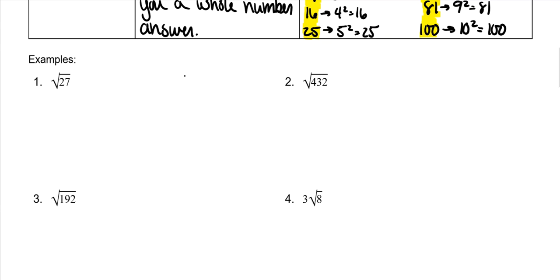Whenever we have square roots, there are two different ways that you can simplify the radical, and it just kind of depends how comfortable you are with the perfect squares. If you aren't very comfortable with them, doing a factor tree is the best way to start out. It doesn't mean that you always will end up doing it that way, but it's the easiest way to start out.